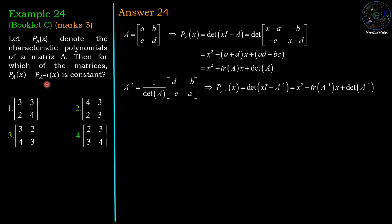In the example we want the difference of P_A(x) minus P_A inverse (x). So its difference is x squared cancels with x squared, then we have trace of A inverse minus trace of A times x plus determinant of A minus determinant of A inverse.